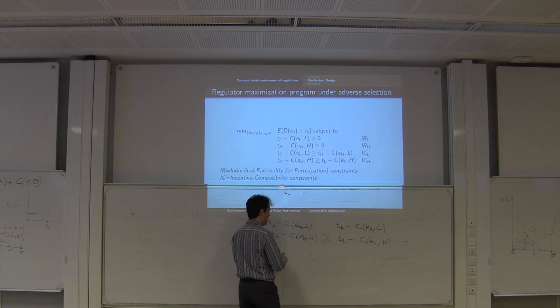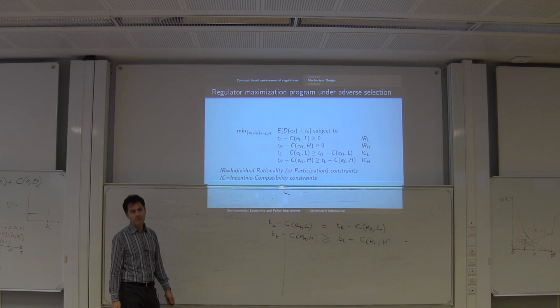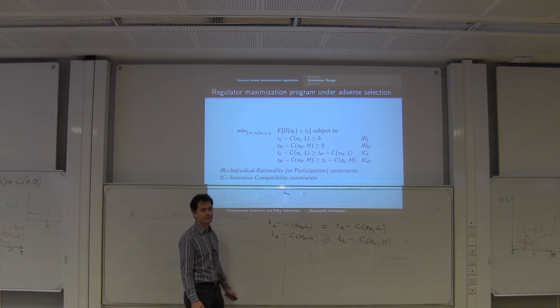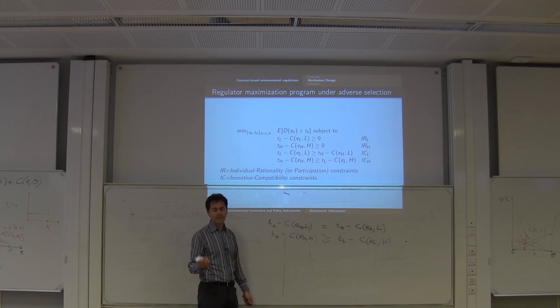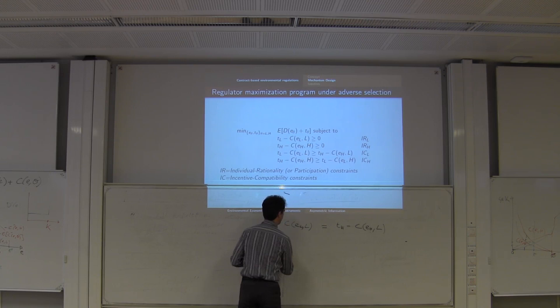To solve, you bind this constraint. There is another binding constraint: individual rationality for the high-cost firm. Because the high-cost firm has higher costs by definition, you want to minimize the transfer — and you minimize it by paying just the high-cost. So the two binding constraints are the low-cost firm's incentive-compatibility and the high-cost firm's individual rationality.